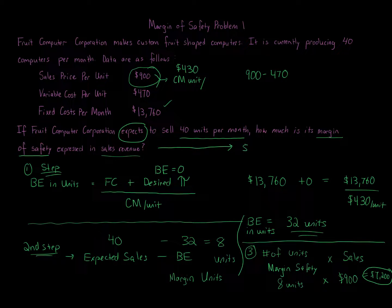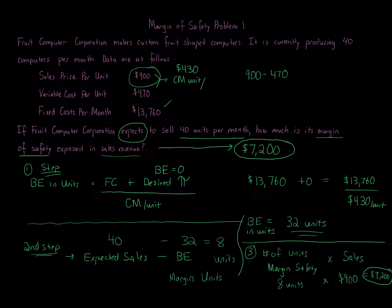The margin of safety expressed in sales revenue equals $7,200. Think about what's going on: you're going beyond the break-even amount of 32 units. You could also calculate break-even in dollars by taking fixed costs plus desired profit of zero, divided by the contribution margin ratio.